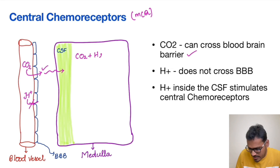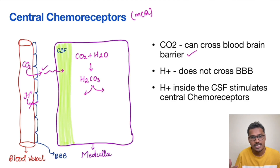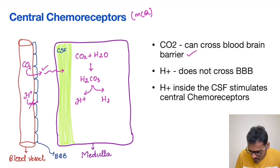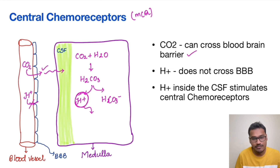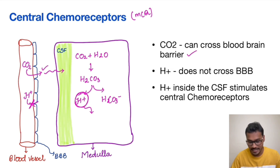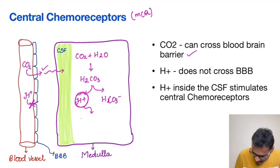What happens is CO2 enters the central chemoreceptor region and combines with water — this is a universal reaction — which forms carbonic acid, which then splits into H+ and bicarbonate ions. This H+ is the one which stimulates the central chemoreceptors. So even though H+ ions do not enter the blood-brain barrier directly, they are indirectly generated through the conversion of CO2.